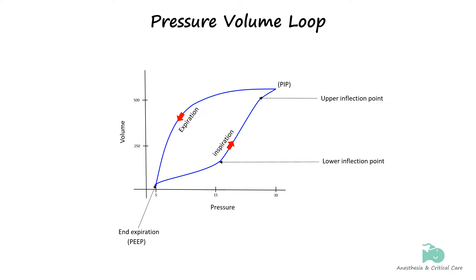During spontaneous ventilation, the pressure-volume loop moves in a clockwise direction, contrasting with the counterclockwise movement seen in controlled mechanical ventilation.